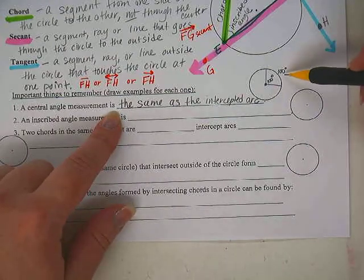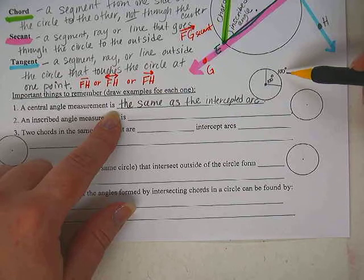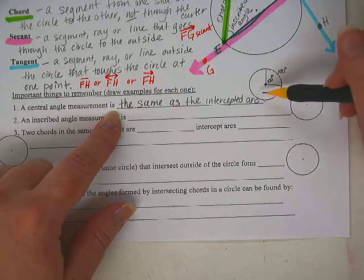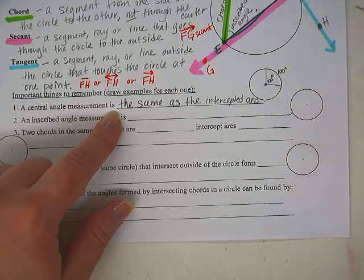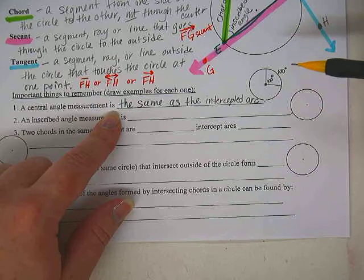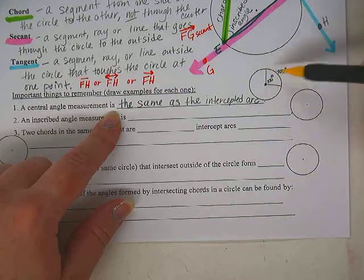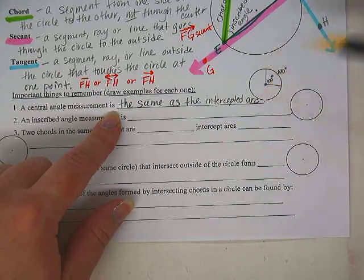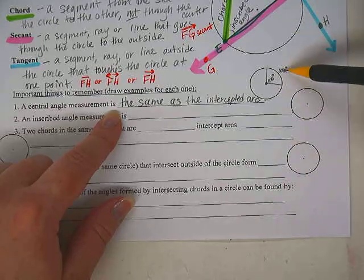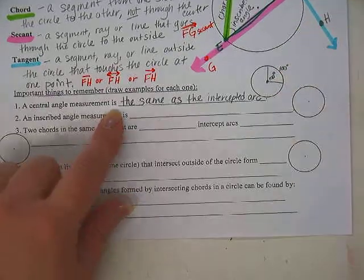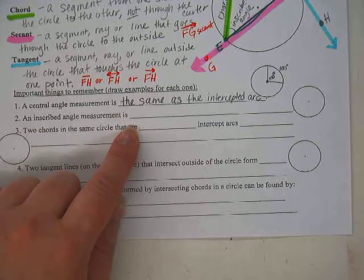What if the arc was 120 degrees? What would the angle be? 120 degrees. It goes both ways — they're the same either way. The converse and the conditional are both true. If this is 100, that is 100.